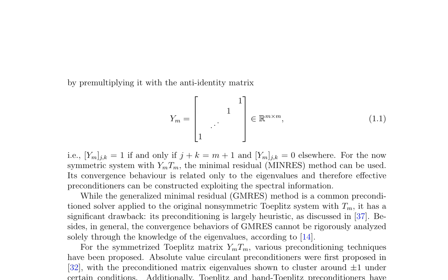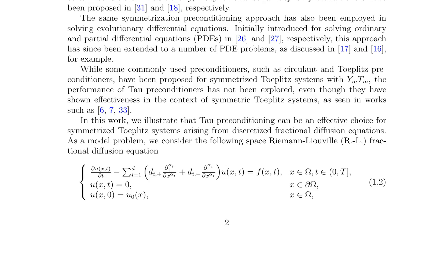In contrast, the generalized minimal residual (GMRES) method, commonly used for non-symmetric Toeplitz systems, relies on a heuristic preconditioning approach, and its convergence behavior cannot be rigorously analyzed solely through eigenvalue knowledge. Various preconditioning techniques have been proposed for symmetrized Toeplitz matrices, including absolute value circulant preconditioners, Toeplitz, and band Toeplitz preconditioners. However, the performance of tau preconditioners, effective in symmetric Toeplitz systems, remains unexplored in the context of symmetrized Toeplitz systems. To address this, the authors investigate the effectiveness of tau preconditioning for symmetrized Toeplitz systems arising from discretized fractional diffusion equations.